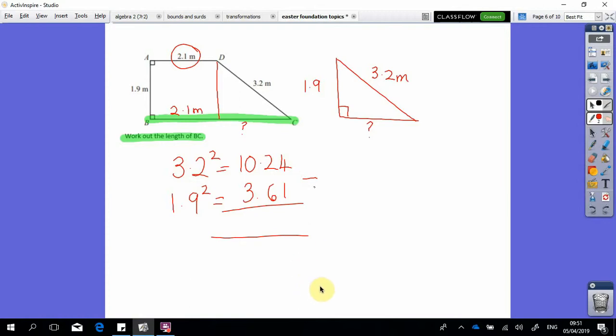Now that's not my answer. I have to square root it because if you remember, we're working out a short side and 6.63 is bigger than 3.2.